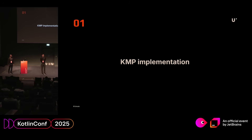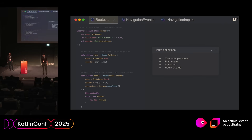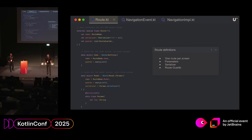We're going to fly through a lot of code in the next 10 minutes. We start on the KMP side with routes. Everybody knows what a route is - every screen has one route. It's just a sealed class in KMP that holds a bunch of classes - one data class for every route, where we hold information like the route name, route parameters, and some more fancy stuff like route guards, which we'll get into a little bit later.